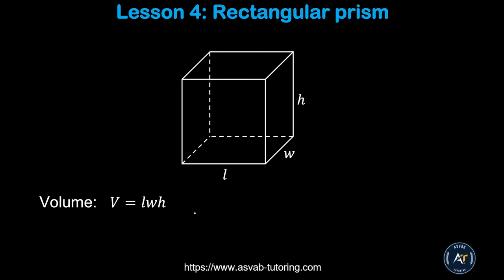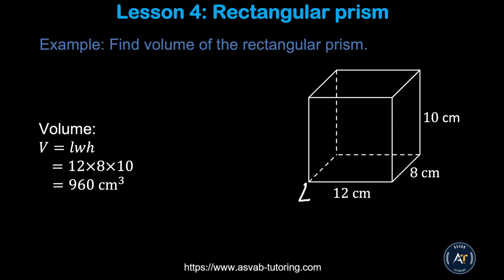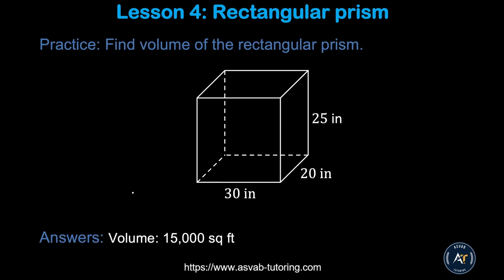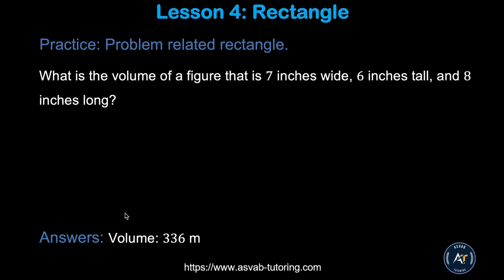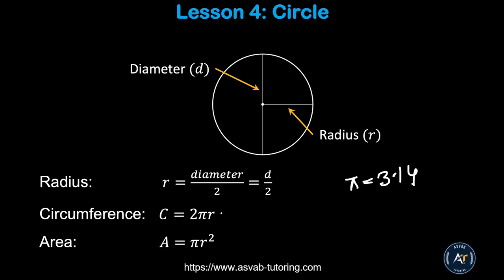Now we'll learn how to find the volume of a cube. The formula is V equals length times width times height. In the example, the length is 12, the width is 8, and the height is 10. Multiplying all of them gives 960 cubic centimeters. Pause the video and try the practice problems — make sure you get a volume of 336 cubic meters.